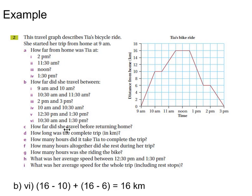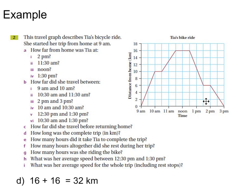C: How far did she travel before returning home? So the distance, the furthest distance is actually 16km. You can actually see that. How long was the complete trip in kilometres? So 16 - she's gone all the way away from home and then all the way back. So 16 plus 16 is 32.